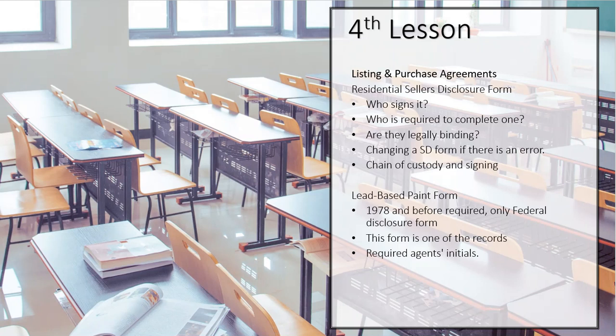If the seller changes the disclosure and the buyer says, I would not have entered into this contract had you given me the truth — therefore I get to get out of it with no repercussions because I entered into it falsely. The buyer is allowed two days to get out of the deal with no repercussions, meaning the seller cannot keep the earnest money. The buyer can actually get out of the purchase agreement within two days of the change.